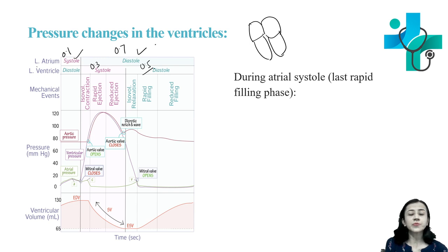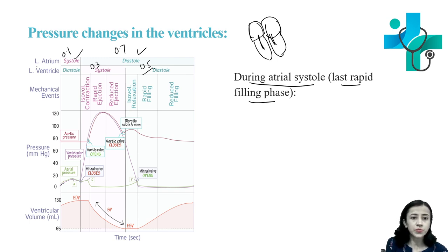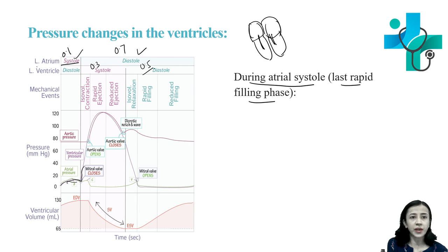Starting with pressure changes in the ventricle. During atrial systole, the atria are contracting. This is equal to the last rapid filling phase, meaning filling of the ventricles takes place. This curve shows the ventricular pressure change. Starting with the atrial systole part — this is the atrial systole portion.